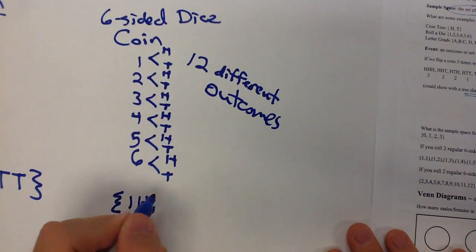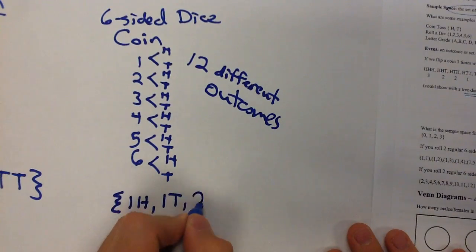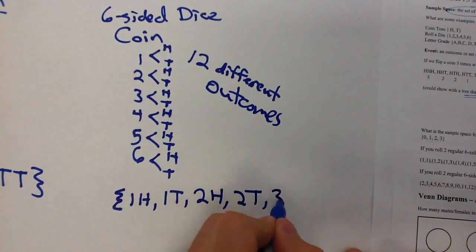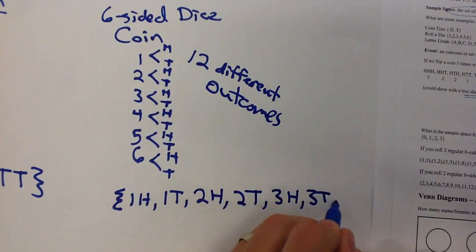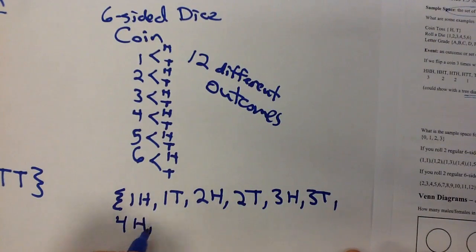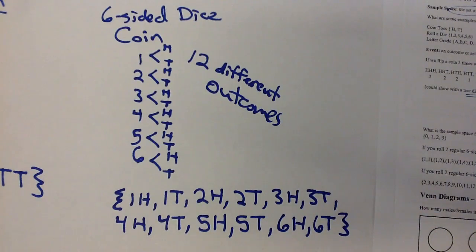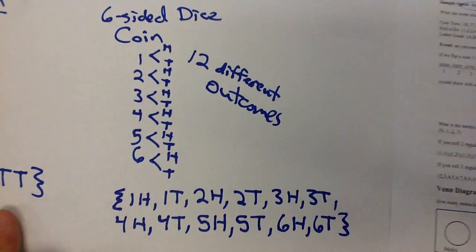Now, how do we write that as a sample space? Well, we have one heads, one tails, two heads, two tails, three heads, three tails, four heads, four tails, five heads, five tails, six heads, six tails. And that is our sample space of all of the possible outcomes. If I was to do this experiment over and over again, it's going to fit to one of those.